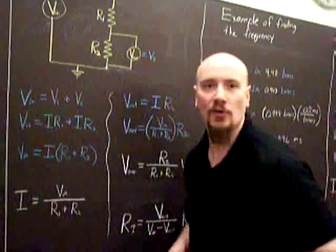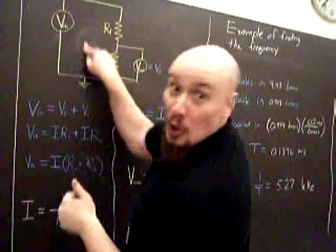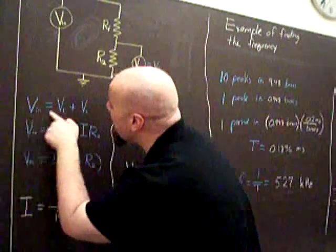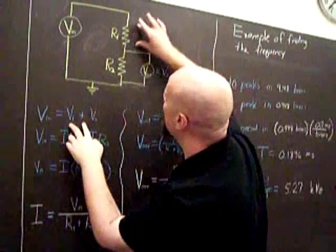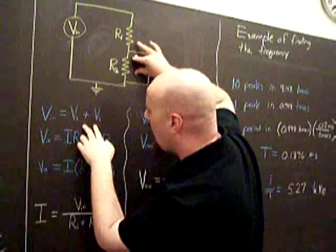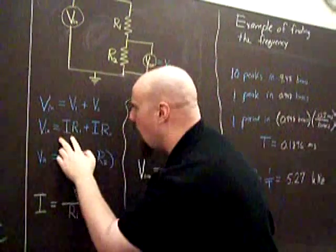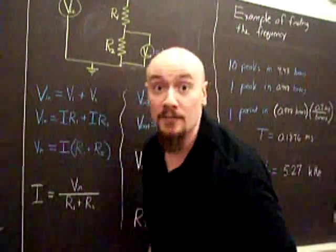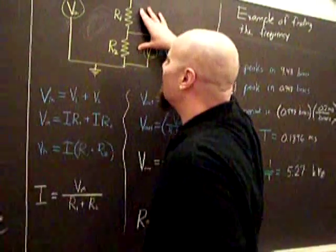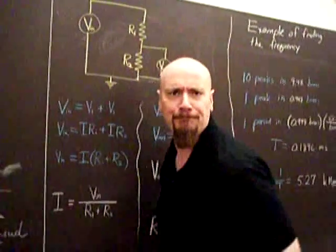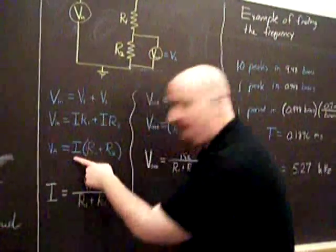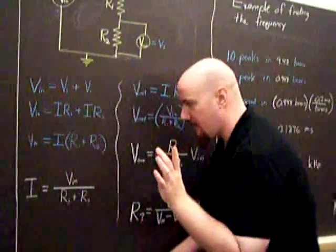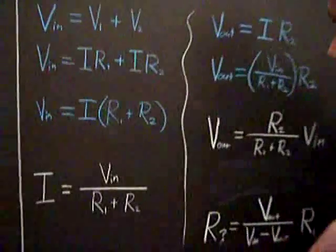So now we could use some loop law action to find what we expect. V-in would just be the sum of the two voltage drops, V1 plus V2. Ohm's law would give us V1 is IR1, V2 is IR2. Notice no subscripts on the I, because we know that these are in series — the current will be the same. Factoring out that common I, we get this expression for I: V-in over the series sum of the resistors.